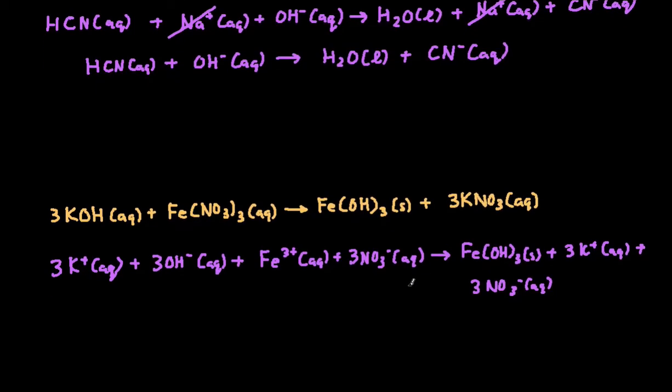So that's going to be our complete ionic. Then to get to our net ionic, we just cross out any ions that are the same on both sides. Here we have multiple. Potassium plus is a spectator ion, and we also can cross out nitrate because that's also on both sides. We can cross out the 3 nitrate with the 3 nitrate here. So potassium plus and nitrate are our spectator ions.